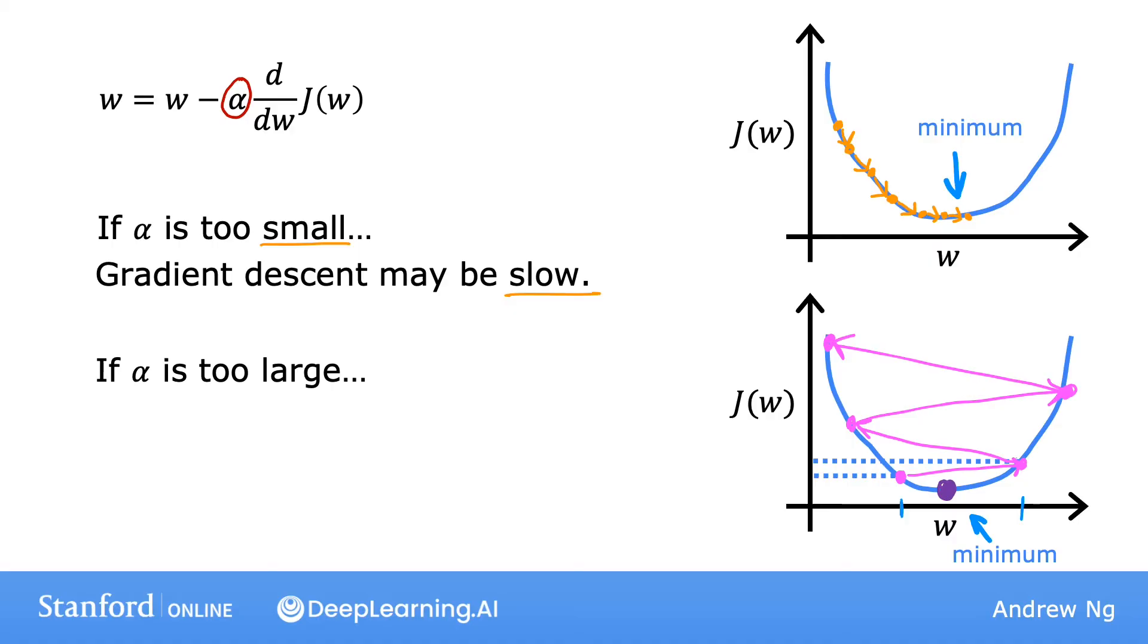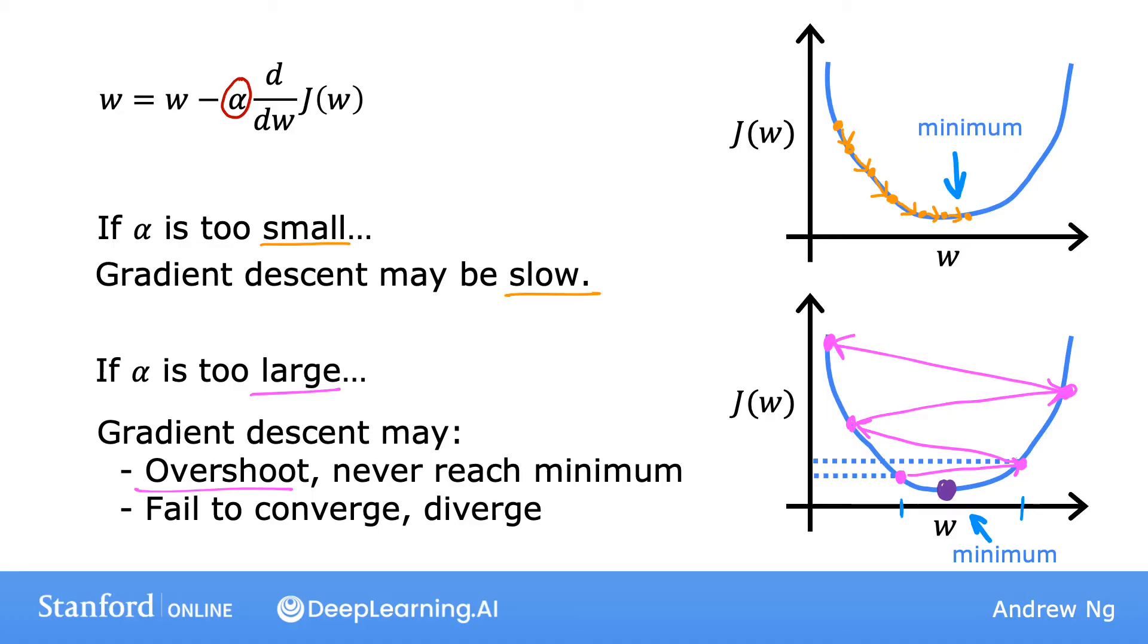So as you may notice, you're actually getting further and further away from the minimum. So if the learning rate is too large, then gradient descent may overshoot and may never reach the minimum. And another way to say that is that gradient descent may fail to converge and may even diverge.